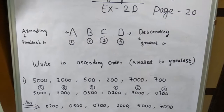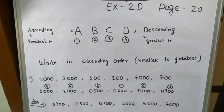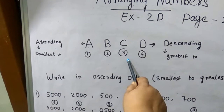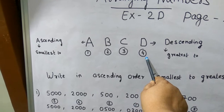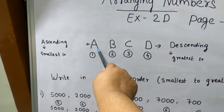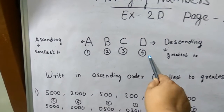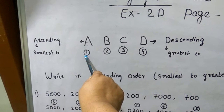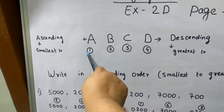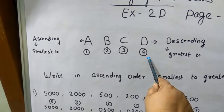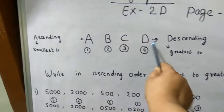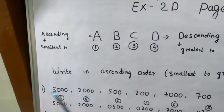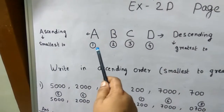Now I am going to explain how you can identify ascending and descending. See, here A, B, C, D — I put the number 1 for A, 2 for B, 3 for C, and 4 for D. Here A stands for ascending order and D stands for descending order. A comes first, so I put number 1, and D comes fourth, so I put number 4. That means D is greater than A.